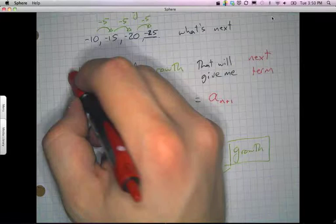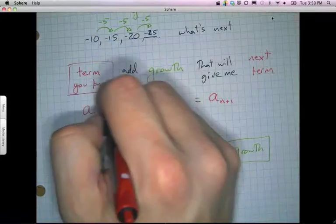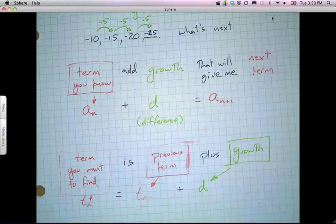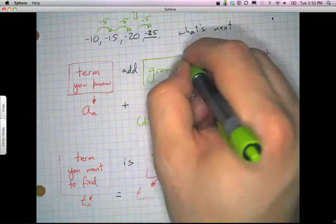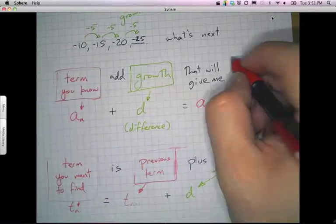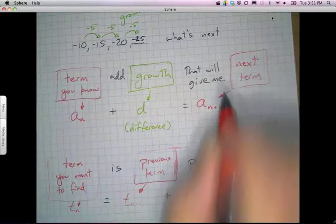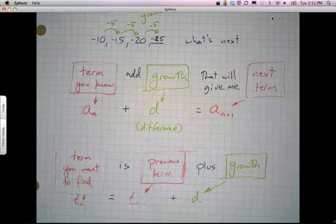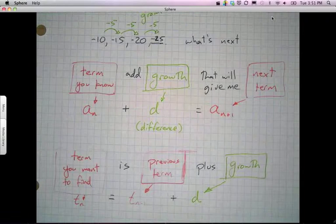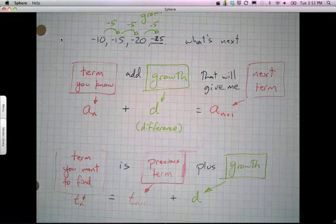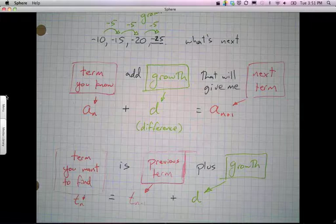Same kind of thing happens up here. The term you know in this recursive formula is a sub n. d is your growth. And the next term is going to be a sub n plus 1. Either one of those two ways are correct. They're just written a little bit differently, using different notation, but still representing the same ideas. That is how you write a recursive form for an arithmetic sequence. Thank you.